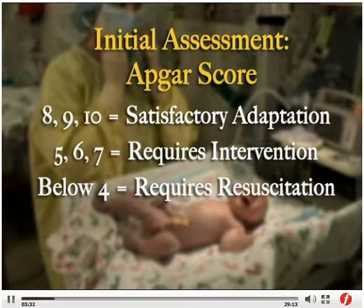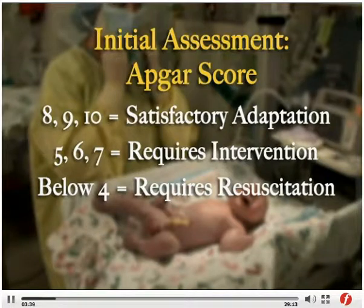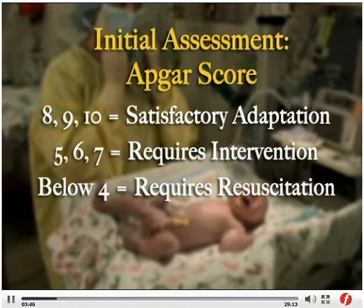Scores between five and seven indicate the need for stimulation and the administration of oxygen with bag and face mask. A score of seven and or below often requires a repeat assessment and scoring at ten minutes of life. Resuscitation will be required if the score is below four.